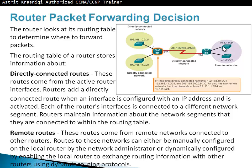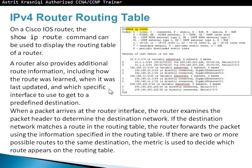Router 1 also knows about two remote routes — learned from router 2. These could be learned dynamically using protocols like RIP, EIGRP, or OSPF, or we can statically configure them on router 1. To summarize: a router keeps two types of routes — directly connected routes, which appear as soon as you activate an interface, and remote routes learned from other routers.